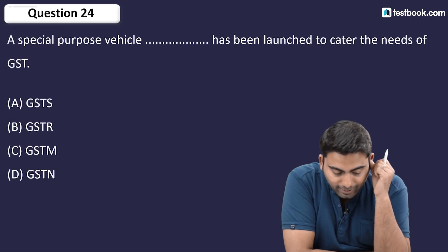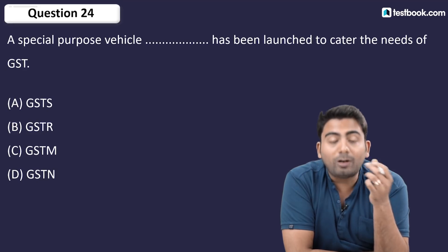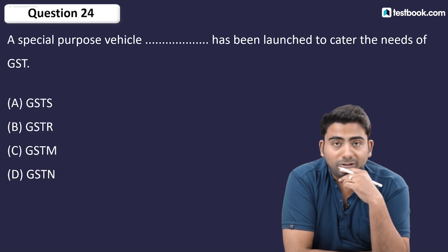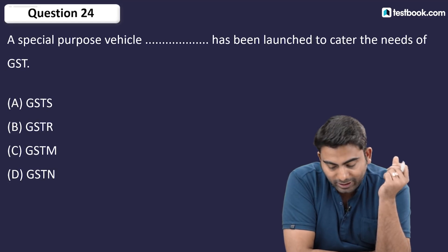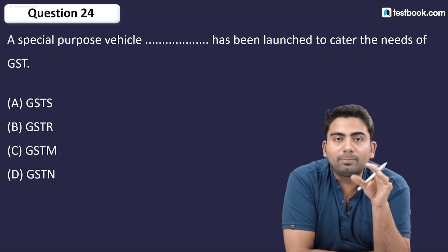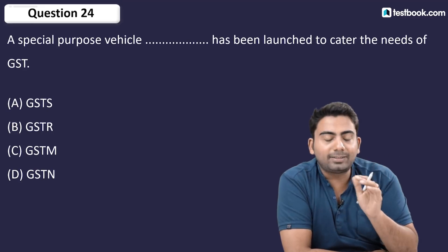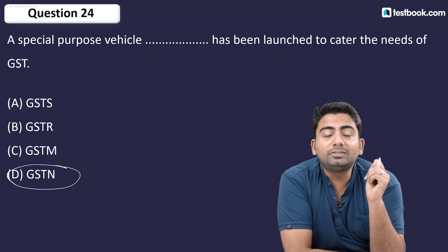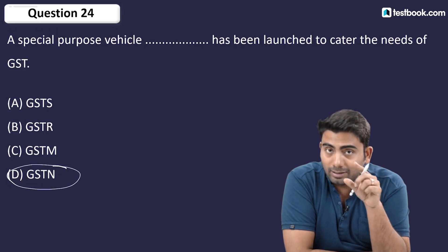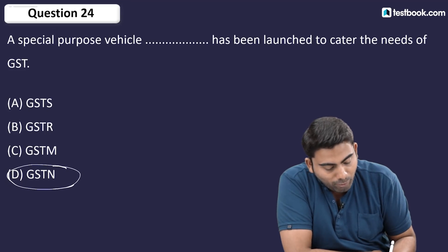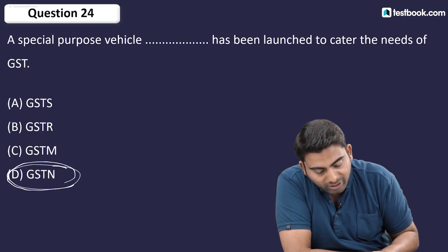Question number 24: A special purpose vehicle has been launched to cater to the needs of GST. What is its name? The correct answer is GSTN — Goods and Service Tax Network. Remember the full form as it can appear in exams.